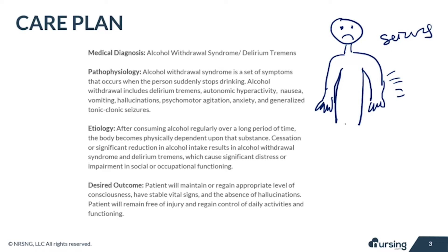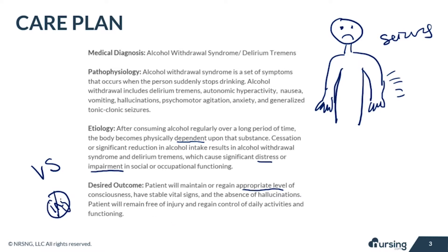After consuming alcohol regularly over a long period of time, the body becomes physically dependent on that substance. Cessation or significant reduction in alcohol results in alcohol withdrawal syndrome and delirium tremens, which causes significant distress or impairment in their lives. The patient will maintain or regain an appropriate level of consciousness, have stable vital signs, and the absence of hallucinations.